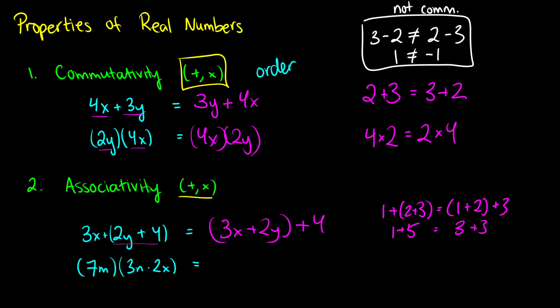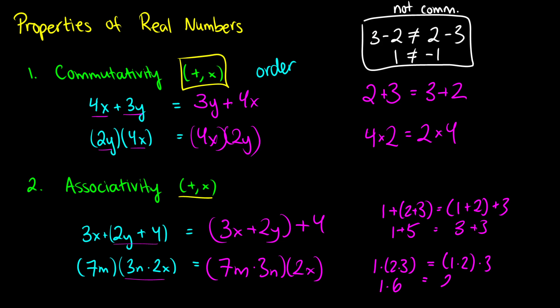The same holds for multiplication. With 7m times 3n times 2x, we can either do 3n times 2x first or do 7m times 3n first — the result is the same. Just like 1 times 2 times 3: whether 2 times 3 happens first giving 1 times 6, or 1 times 2 happens first giving 2 times 3, both come out to 6. The key is that all operators must be the same — you have to be adding three things, or multiplying three things. If you mix addition and multiplication, it won't work. That's associativity.